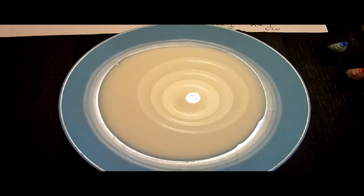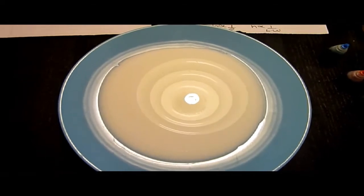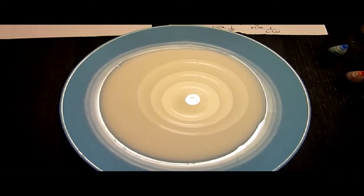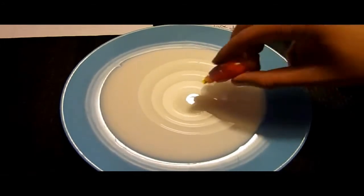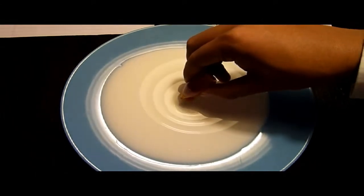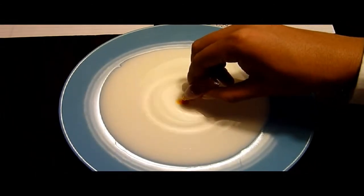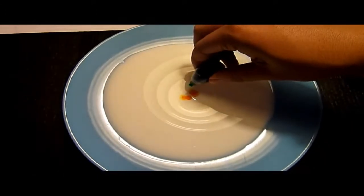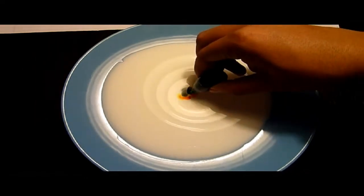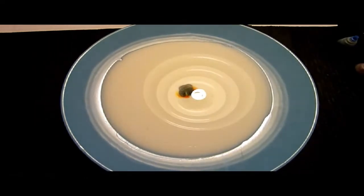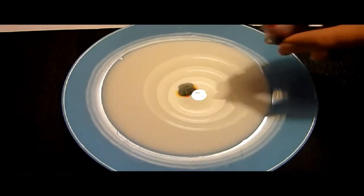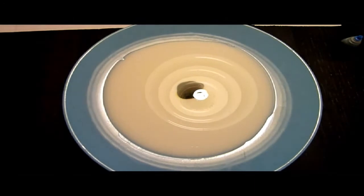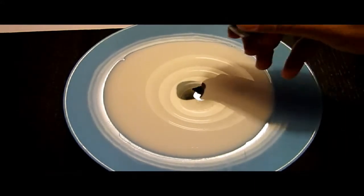However, on the macro scale, we can even see how the surface tension plays a role in the movement of fluid. Here we have some milk, and we'll simply add some food coloring. Notice how the food coloring stays in place as I add each drop.